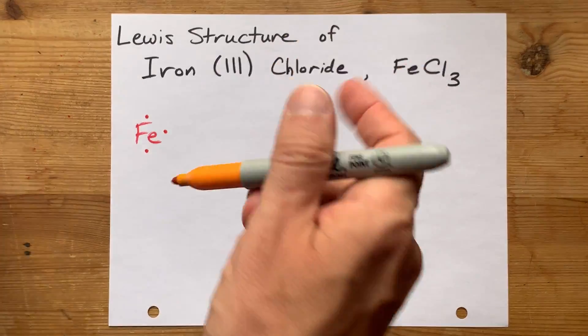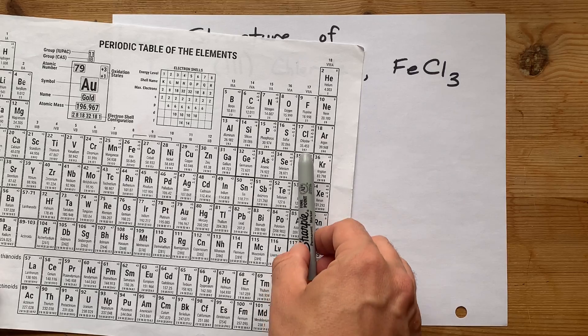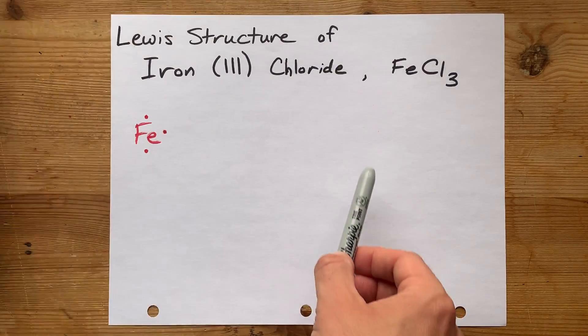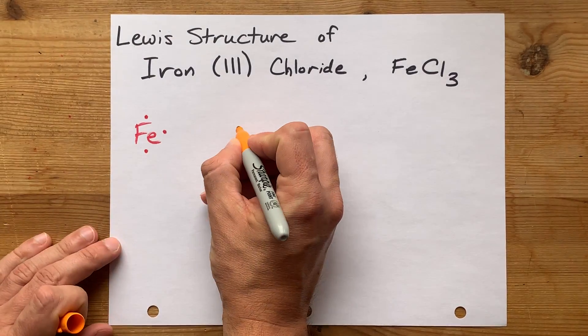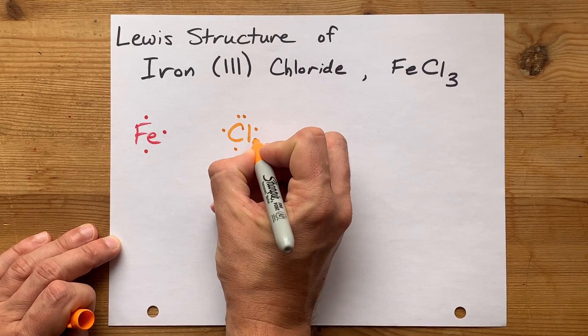Now chlorine is a non-metal. It's from the right-hand side of the periodic table. And in group 17, it brings seven valence electrons. 1, 2, 3, 4, 5, 6, 7.